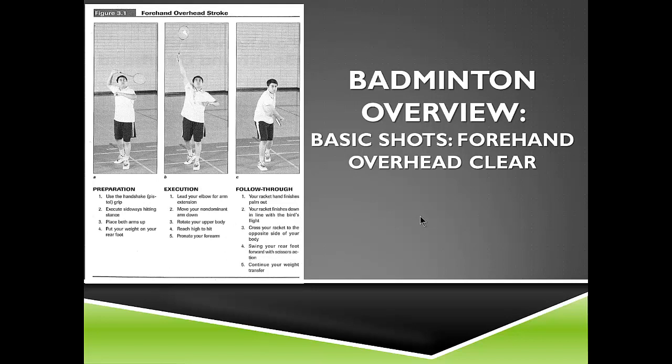For the overhead forehand clear, the birdie is above the head and is used to hit it deep into the opposing player's court. Use the standard grip, stepping in opposition with both arms above the head. Weight starts on the rear foot and shifts to the front foot as you strike. Lead with the opposite elbow, move the non-dominant arm down, rotate the upper body, and make contact with arm fully extended above your head. Follow through with the racket across the body to the opposite side, stepping forward with a weight transfer.